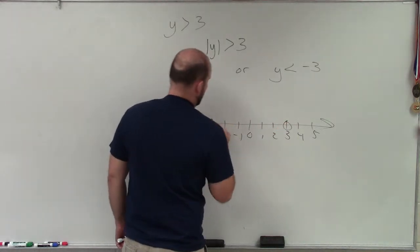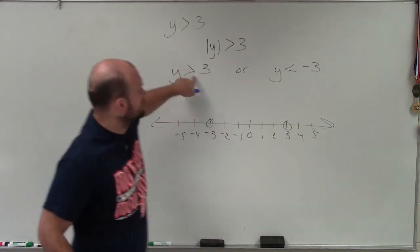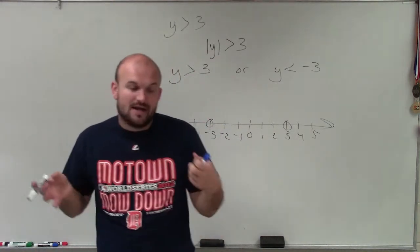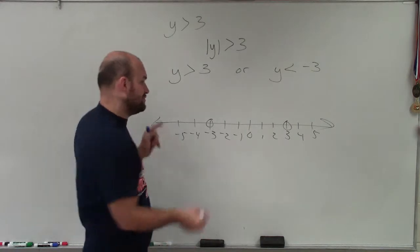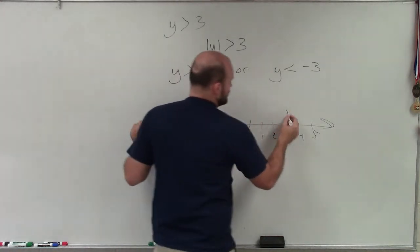So I put two circles at 3 and negative 3. I notice that this is greater than and less than, so therefore they are not going to be equal to 3 and negative 3. So it's going to be false for both of these.